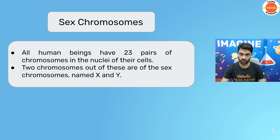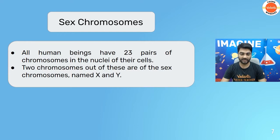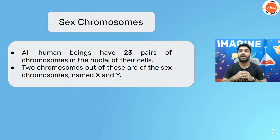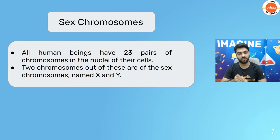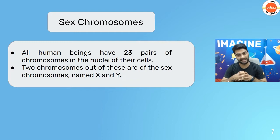So out of these two sex chromosomes, in males it is X and Y, and in females it is X and X. In every cell of your body, you will find 46 chromosomes: 44 will be autosomes and two will be allosomes or sex chromosomes. If you are a male, these two are going to be X and Y; if you are a female, it will be X and X.